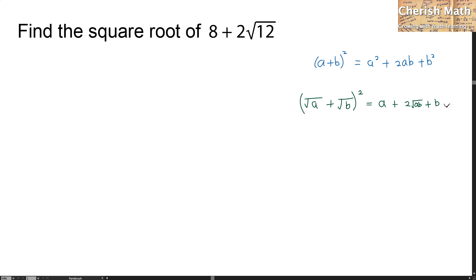Based on this rule, I'm going to use it on the problem here. Since this is a question, 8 plus 2 multiplied by the square root of 12 and square root the entire thing. The first thing I need to do is to spot what are the values of a and b.